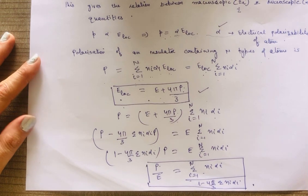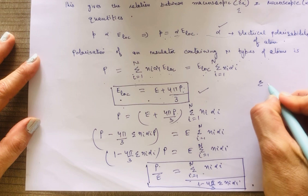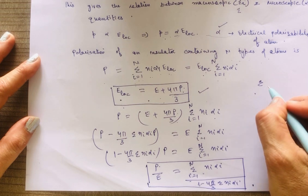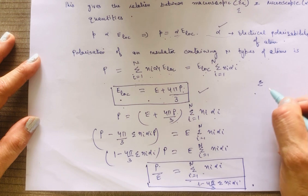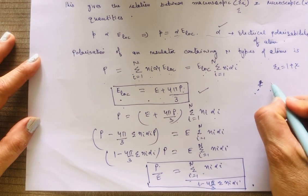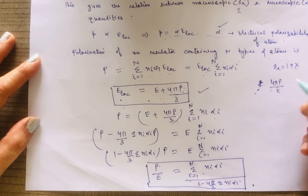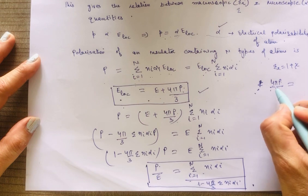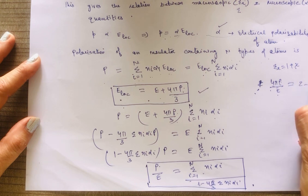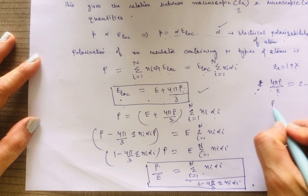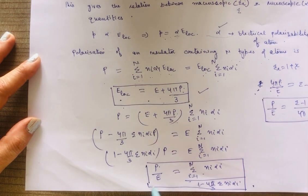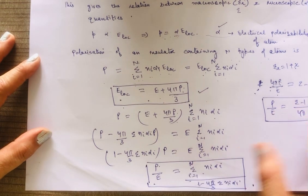We also know the relation between epsilon and susceptibility: epsilon_r = 1 + susceptibility. If we are using epsilon (in Gaussian units), then 4π · P/E = susceptibility, and also 4π · P/E = epsilon − 1. So from this, P/E = (epsilon − 1) / 4π. This is also a value of P/E.